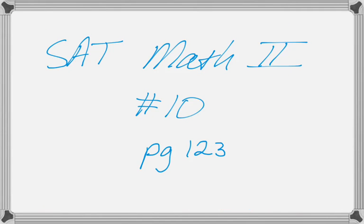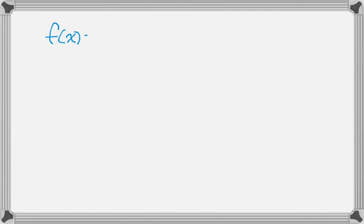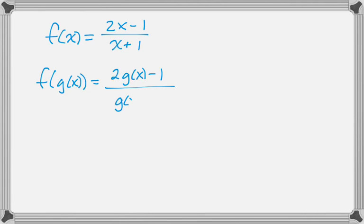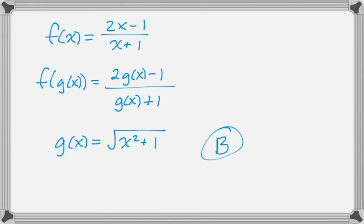Number 10. We're told that f of x is equal to this, and then we're given f of g of x. So what I'm going to do is I'm going to write f of g of x like this: 2 g of x minus 1 over g of x plus 1. And then the question is, what's g of x? Well, by observation, if you just look at the problem in the book, you'll see that g of x must be equal to the square root of x squared plus 1, which is option B.